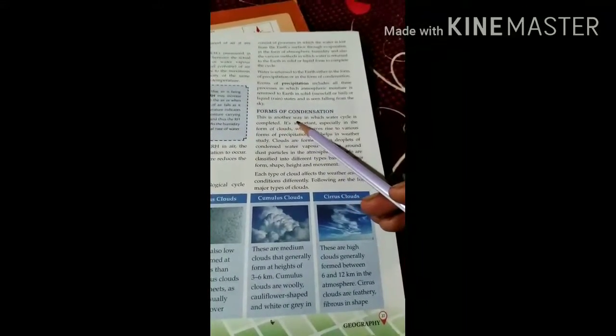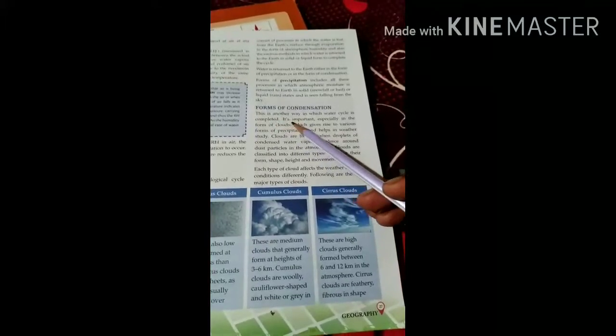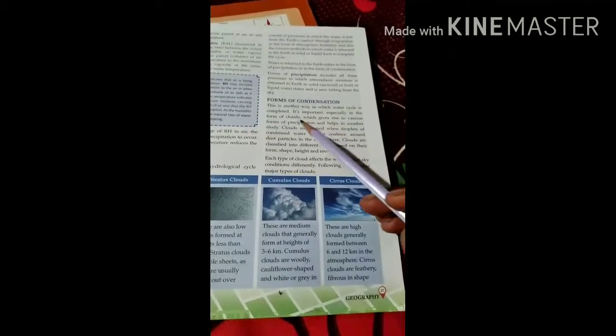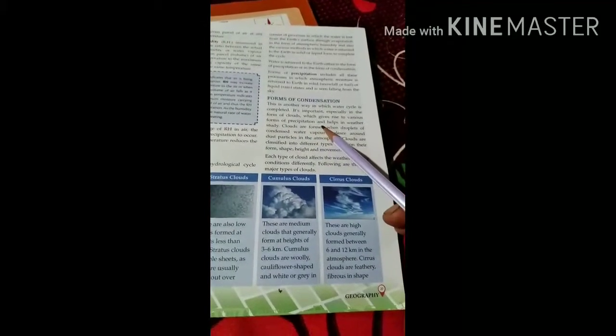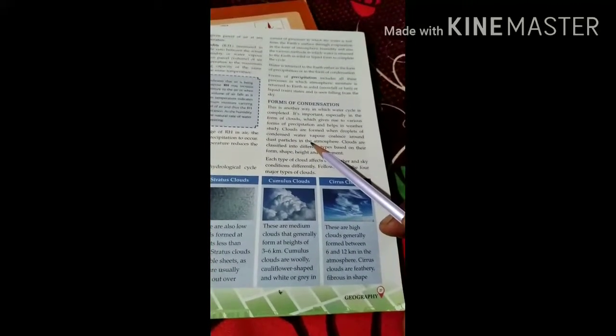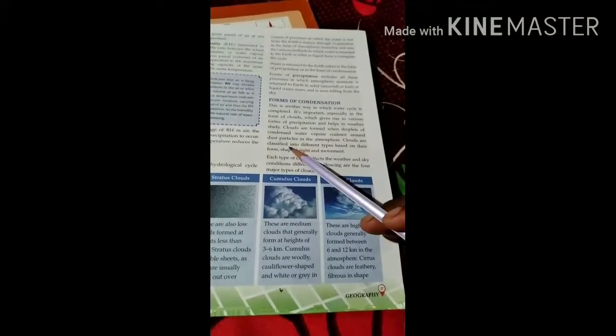Now forms of condensation. This is another way in which the water cycle is completed. It is important especially in the form of clouds, which give rise to various forms of precipitations and help in weather study. Clouds are formed when droplets of condensed water vapor coalesce around dust particles in the atmosphere. Clouds are classified into different types based on their form, shapes, height and movement. Each type of cloud affects the weather and sky conditions differently. Following are the four major types of clouds.